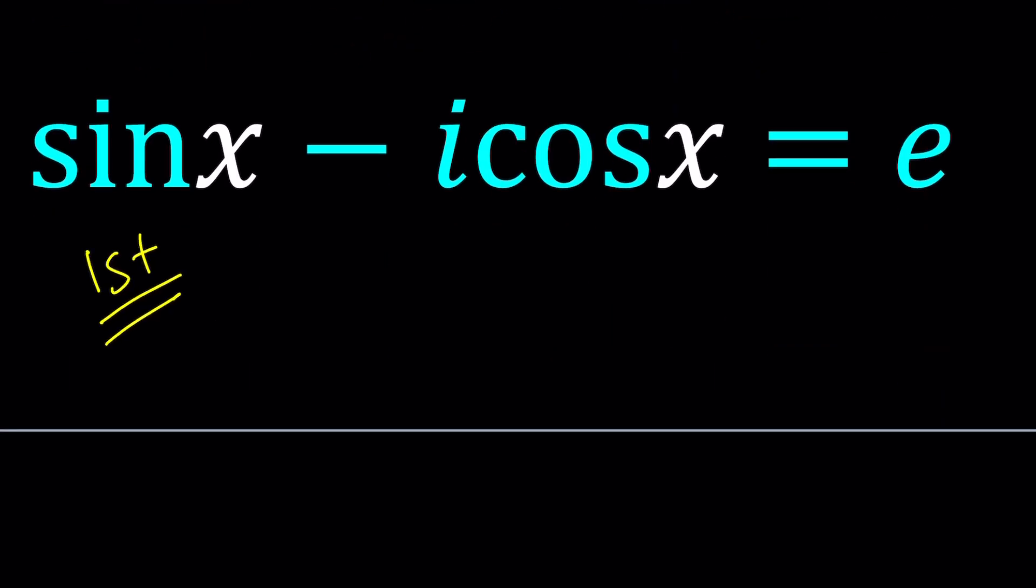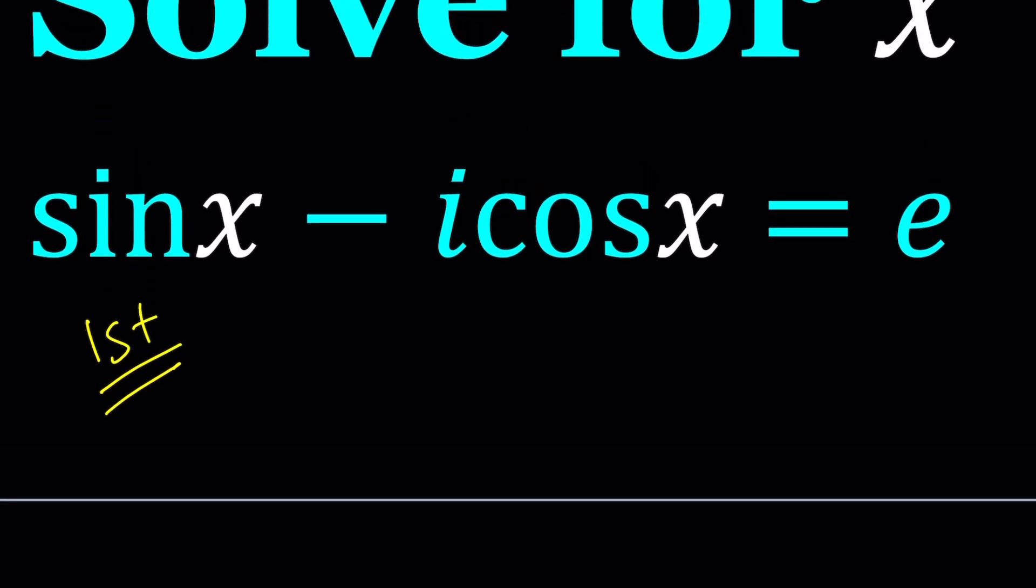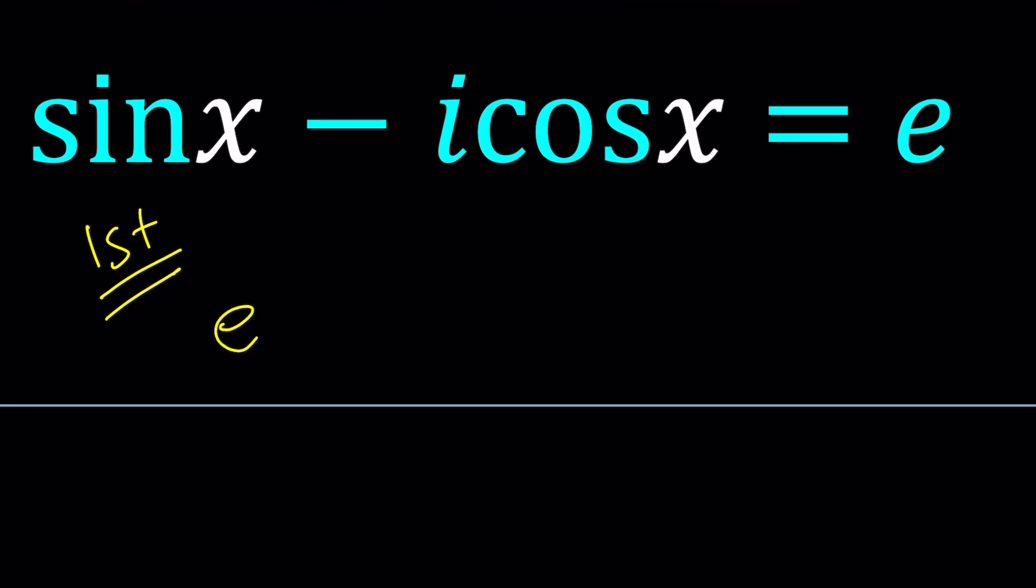To be able to solve this problem, for my first method and for the second method too, I'm going to be using Euler's formula. It's an amazing formula, just mind-blowing. e to the power i theta can be written as cosine theta plus i sine theta. Amazing, right? A relationship that puts together amazing functions.